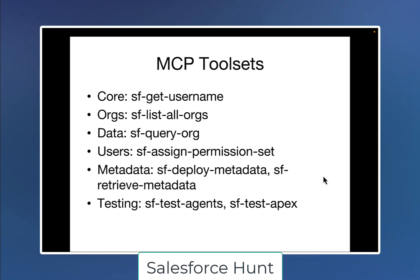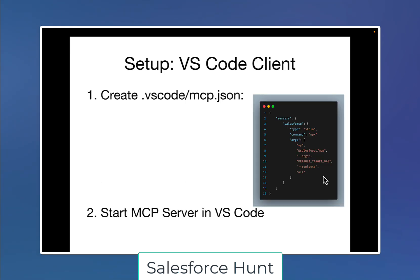The MCP toolset has lots of features. Core functionality includes: SF get username, list all orgs, SF query org users, assign permission sets, metadata deployment, and testing. We can test our Agentforce agent as well as run Apex tests using these tool sets.